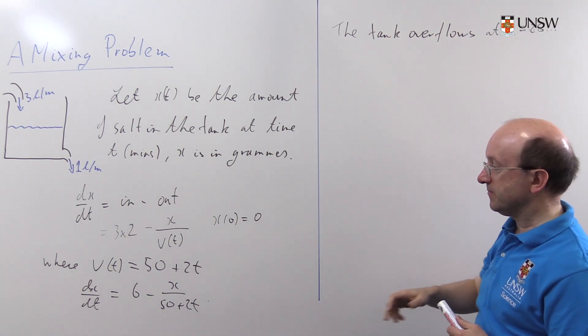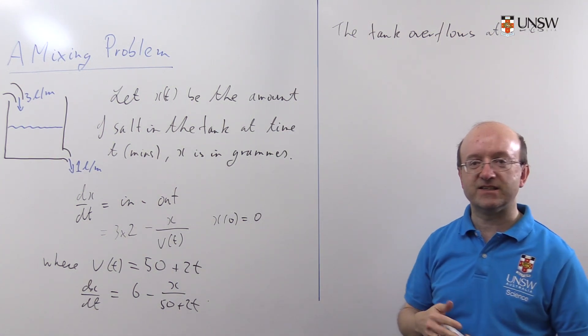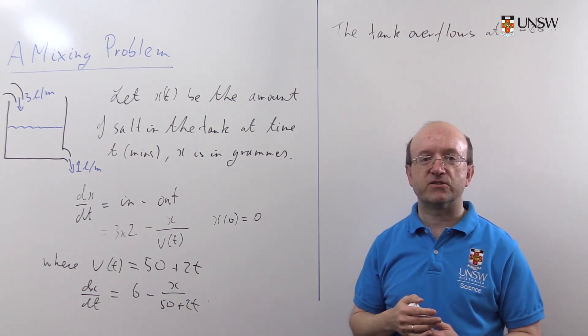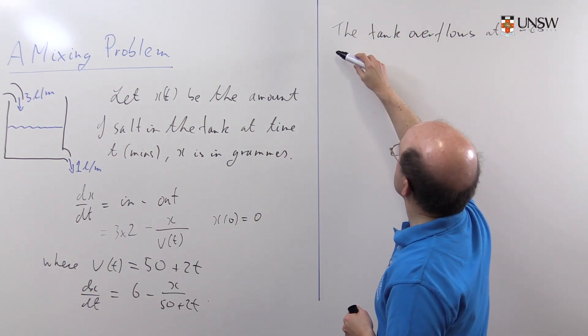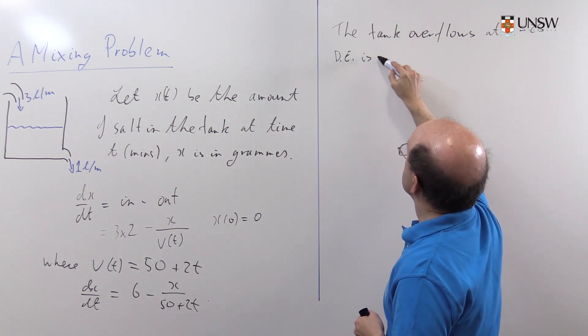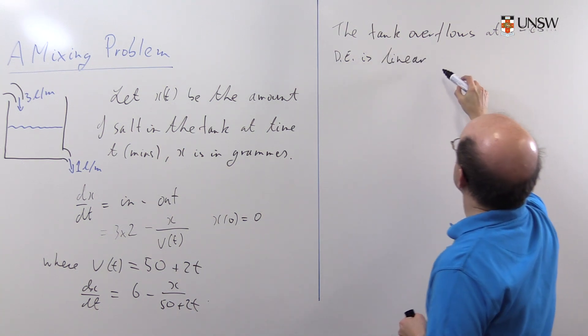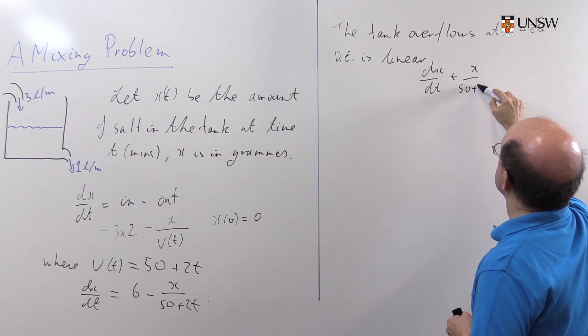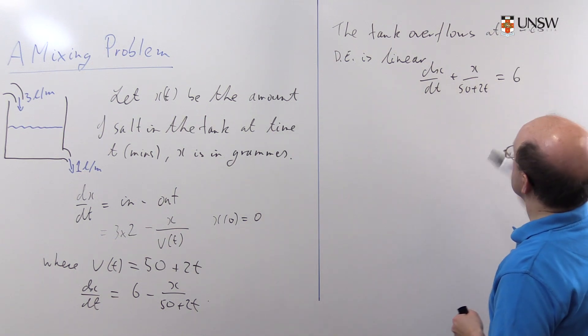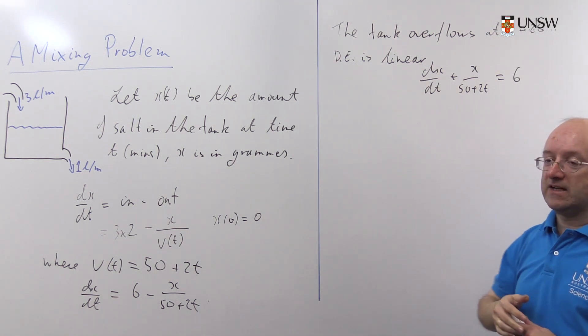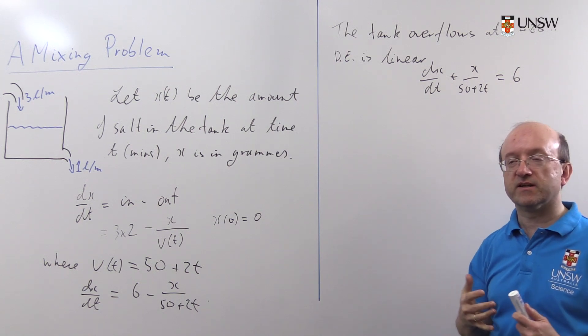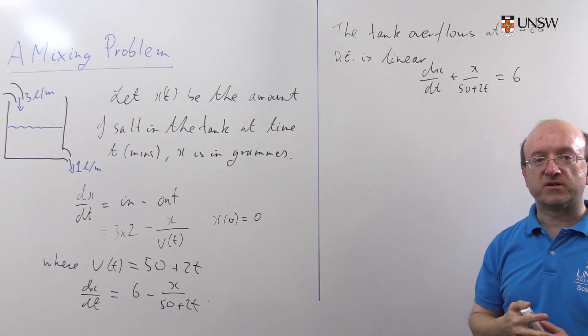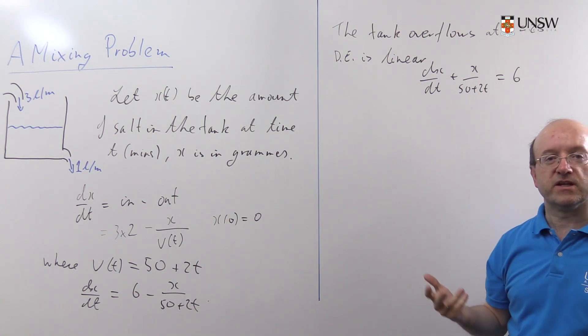We want to solve the differential equation. Well, this differential equation is a linear differential equation. If we move the x over 50 plus 2t to the other side, we get exactly the correct shape for a linear differential equation. So the differential equation is linear: dx/dt plus x over 50 plus 2t equals 6. And we solve linear differential equations using an integrating factor. We need to integrate 1 over 50 plus 2t with respect to t and take the exponential of that.